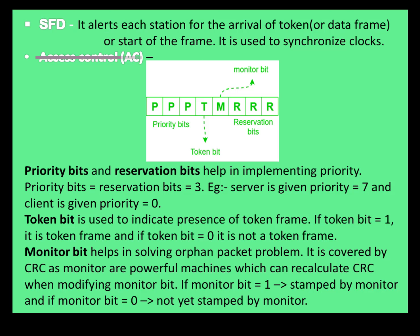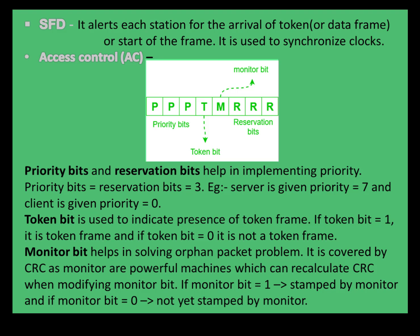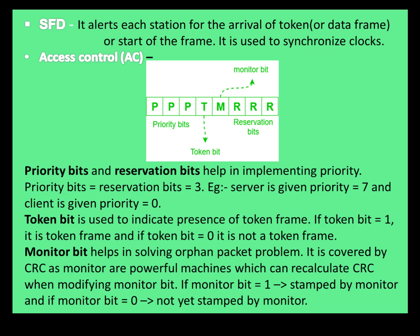Next is Access Control. It contains priority bits, token bits, monitor bits, and reservation bits. The AC field is represented as TPP, TM, RRR, where the P bits are the priority bits. The T bit identifies whether the frame is a token or a data frame, M indicates the monitor bit, and RRR specifies the reservation bits. Access Control is also one byte.